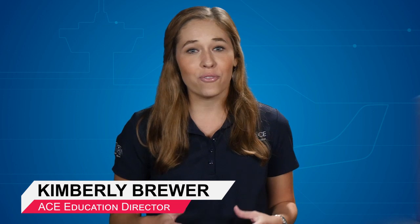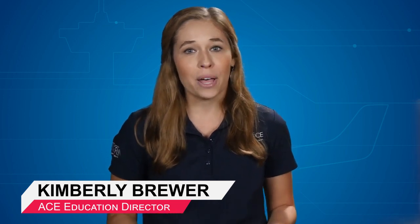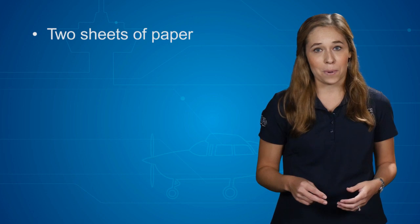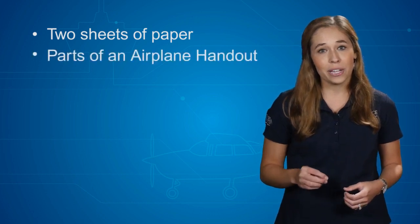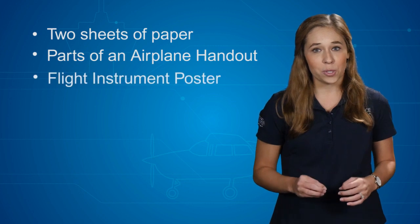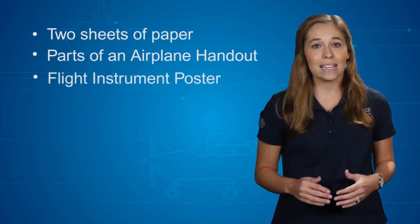Today's lesson is all about the fundamentals of flight. You will learn about the parts of the airplane and their functions, as well as basic flight instruments and their functions. You will also learn why and how an airplane flies. For today's lesson you will need two sheets of paper, the handout in your summer camp kit titled Parts of an Airplane, the flight instrument poster that is also in your summer camp kit, and a pencil.